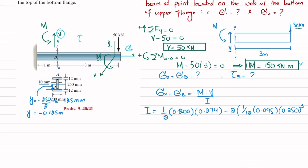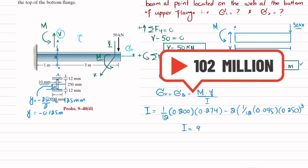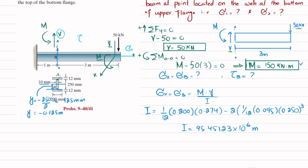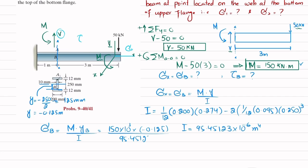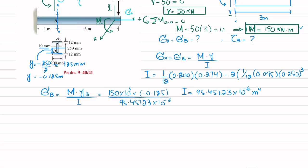Subtracting the two hollow portions: I = (1/12)(0.200)(0.274)³ - 2·(1/12)(0.095)(0.250)³. Solving gives I = 95.45123 × 10⁻⁶ m⁴. Now computing sigma_B: sigma_B = (150 × 10³ × -0.125) / (95.45123 × 10⁻⁶) = -196.43 MPa. This is the normal bending stress at point B.